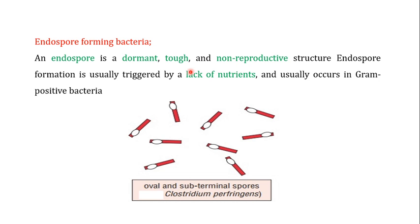Clostridium perfringens are endospore-forming bacteria. These endospores are dormant, tough, and non-reproductive structures. Endospore formation is triggered by unfavorable conditions such as nutrient depletion, which is common in Gram-positive bacteria. The spores are oval in shape and are sub-terminal — not present at the terminal end but at a sub-terminal position.